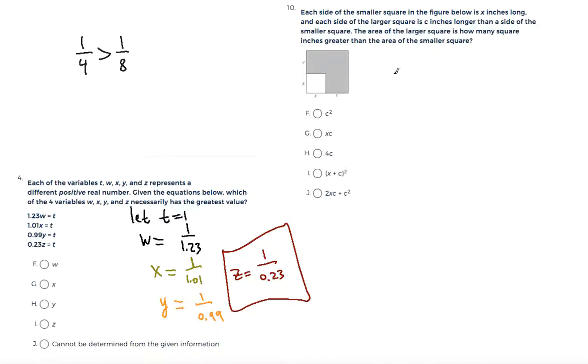Moving on to the next question. The correct answer was z. Each side of the smaller square in the figure below is x inches long, and each side of the larger square is c inches longer than a side of a smaller square. The area of the larger square is how many square inches greater than the area of the smaller square?